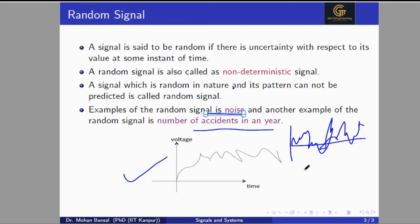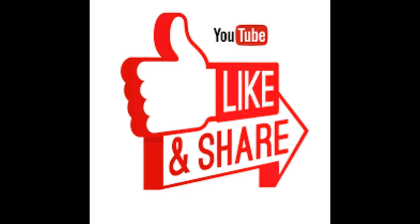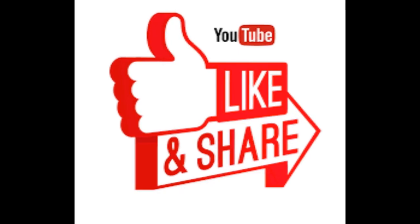So the main point is that a deterministic signal can be predicted — we can find the value of the signal at all time instants. But in a random signal, we can't predict the value; we can't find the value of the signal at any point in time. Thank you for watching this video.